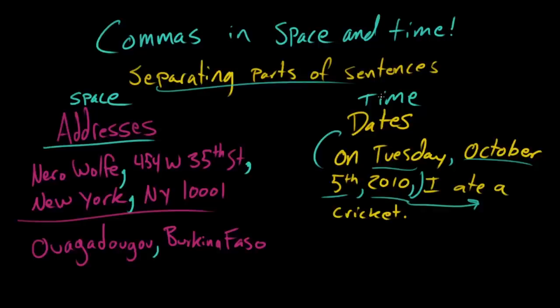So if you want to express a kind of complicated relationship in time or in space, you want to make sure a letter gets to a very specific place, you want to talk about a very specific city in a very specific country, you use commas. You want to talk about a very specific time, you use commas. That's commas in space and time, my grammarians. You can learn anything. David out. Paige out.